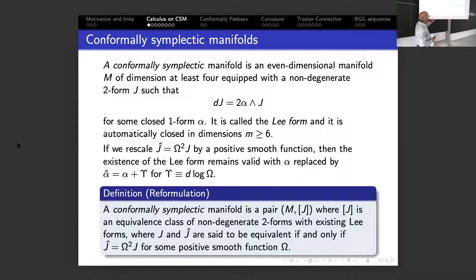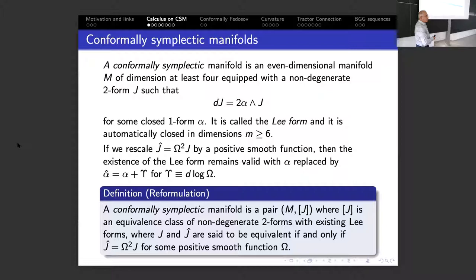It makes sense because if you rescale our conformally symplectic form J by a positive smooth function — say a square of some non-zero function omega — then you witness very similar behavior to what we know from conformal geometry. The Lee form rescales very nicely: you simply add the differential of the logarithm. So a conformally symplectic manifold is simply a pair of a manifold plus a class of equivalent non-degenerate forms, where the equivalence is defined as rescaling in the above way.